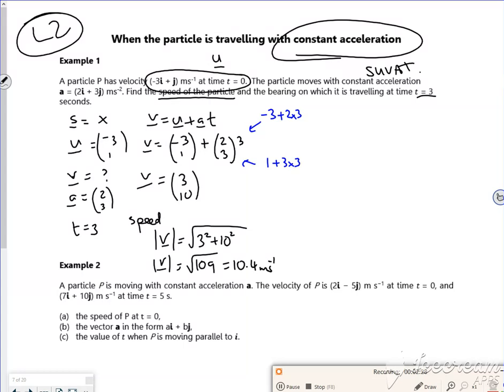Now I want the bearing. Now this is where it's travelling, so it all depends on not where its position is, but which way it's going because of its velocities. So if we want the bearing of it, which way it's travelling, we need the velocity vector.